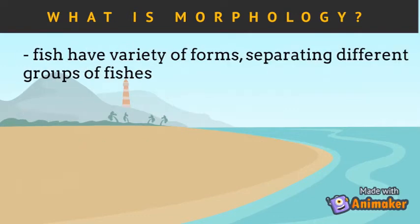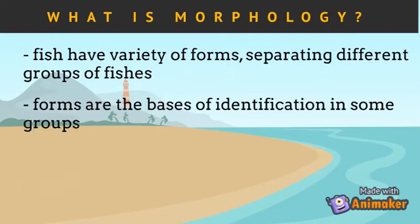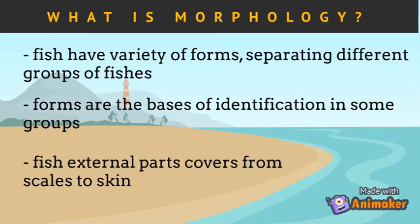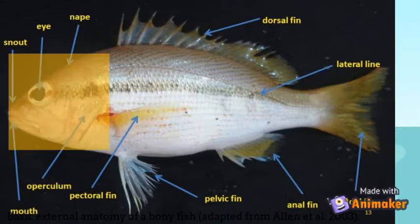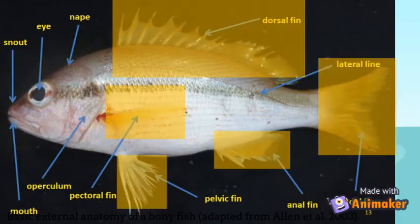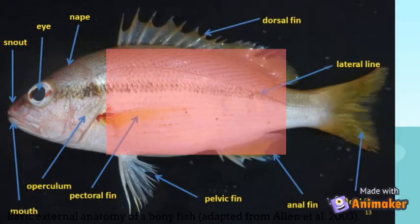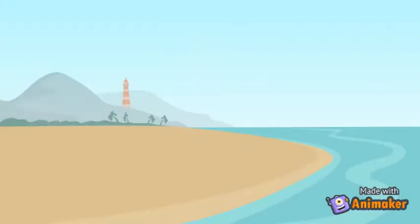Fish have a variety of forms separating different groups of fishes, and these forms are the basis of identification in some groups. Fish external parts cover from scales to skin. This photo shows the basic external anatomy of a teleost, or bony fish. You can see the head, the eyes, the operculum, the fins, and the scales, among others.